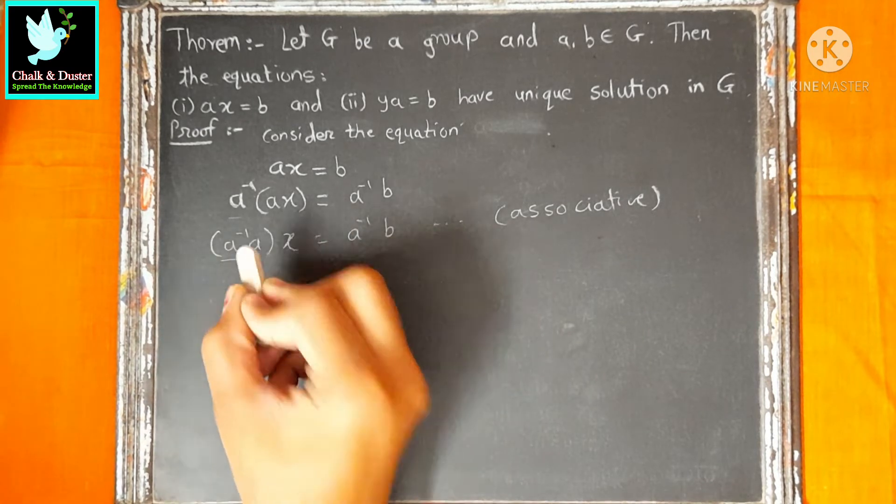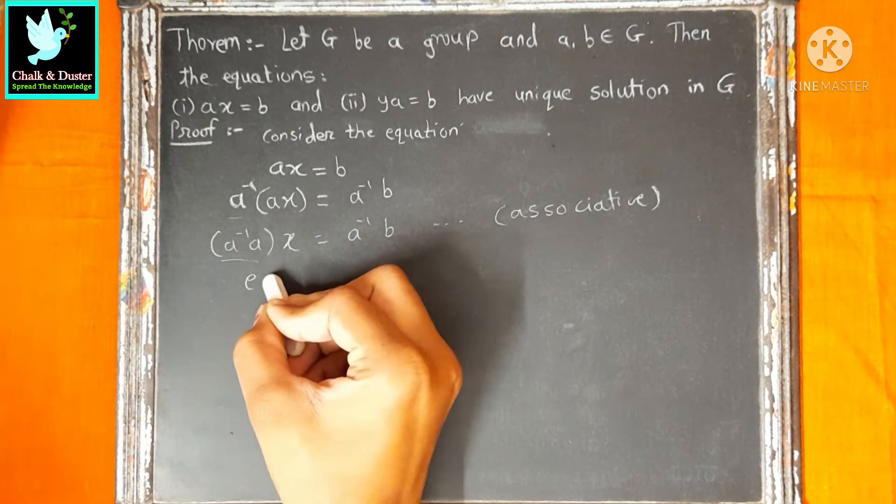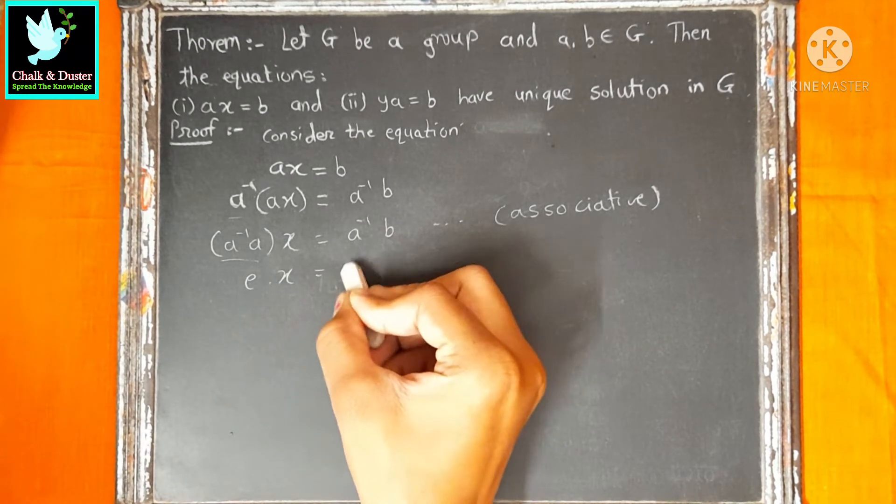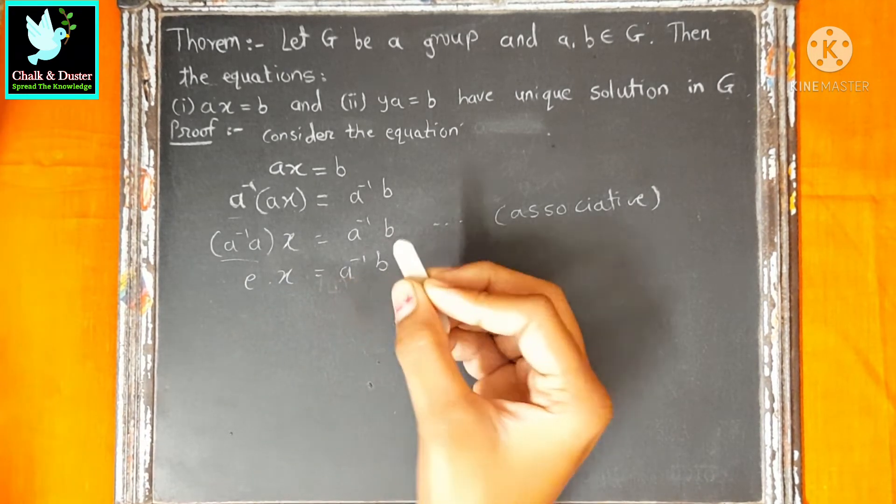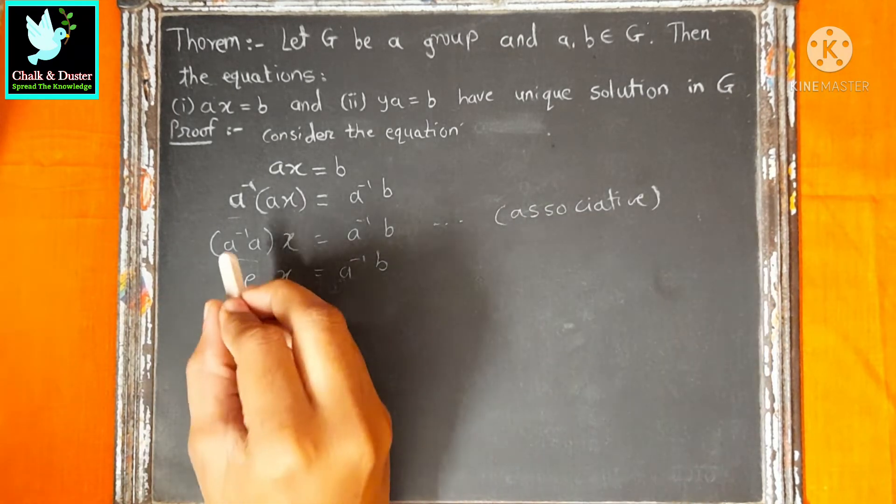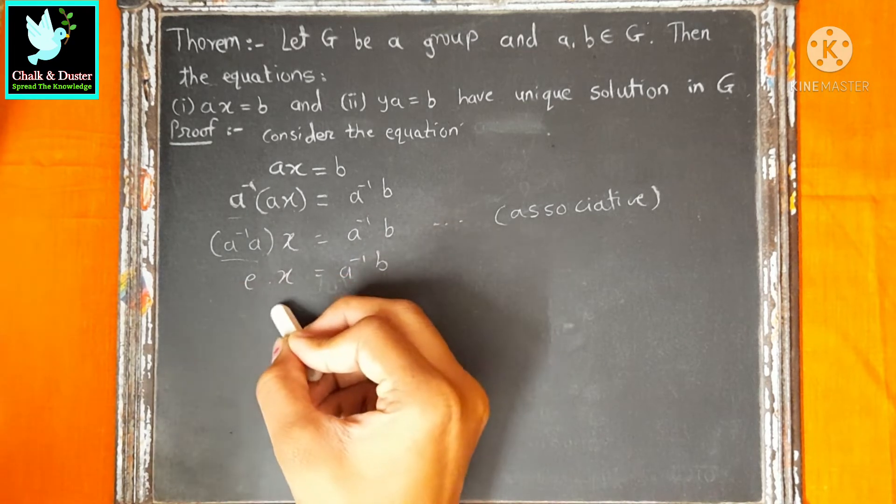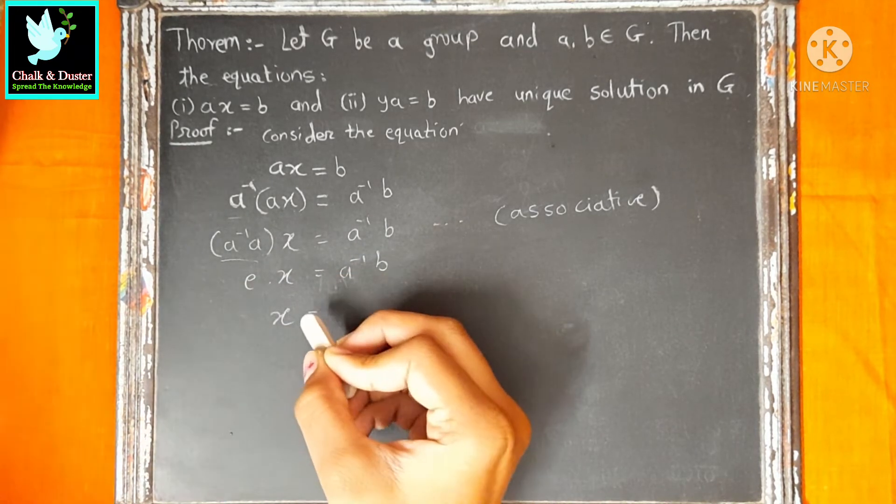Next step, A inverse into A is what? Identity. So, identity into X is equal to A inverse into B. Next step, identity into X becomes X.